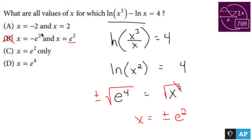However, if you were to try to plug in a negative into an ln, you can't take the ln of a negative number. It is undefined. So it can't be B. This is incorrect.